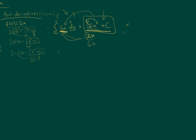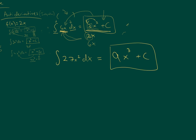Let's do one more. The integral of 27x squared. Again, I raise the exponent by 1. If I took the derivative of x cubed, I would just get 3x squared. But I need 27x squared. So 3 times what makes 27? Well, 3 times 9 does. So the antiderivative is 9x cubed plus c.